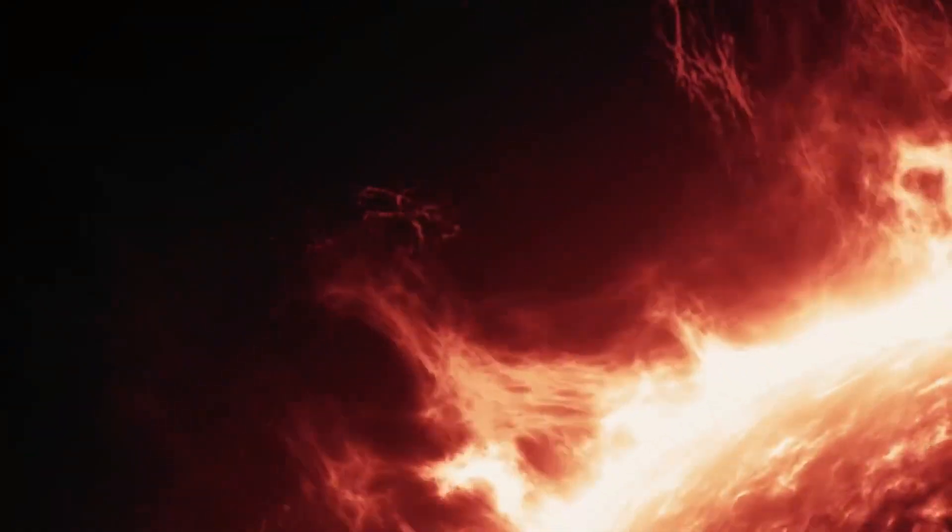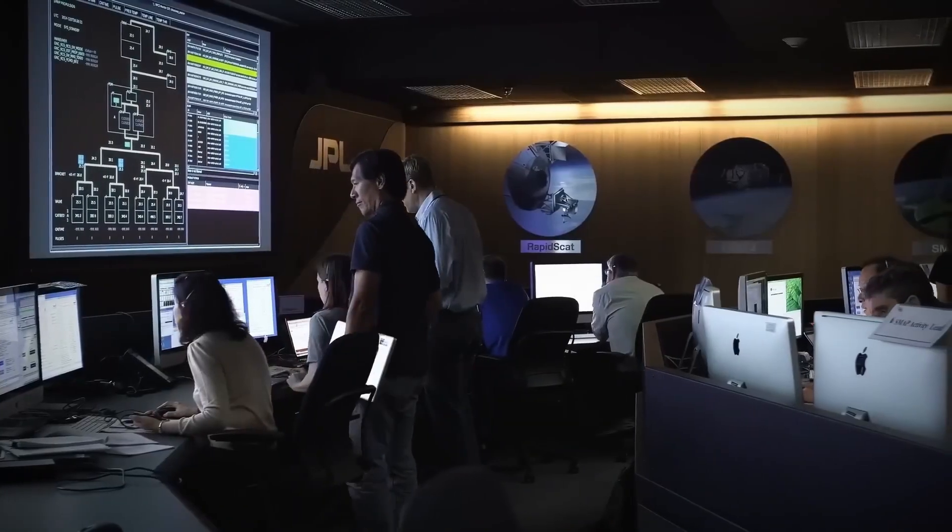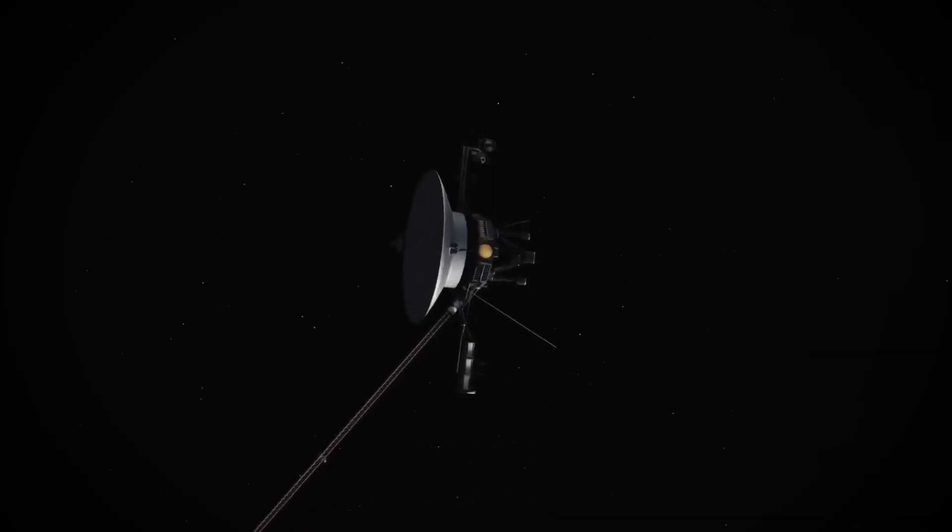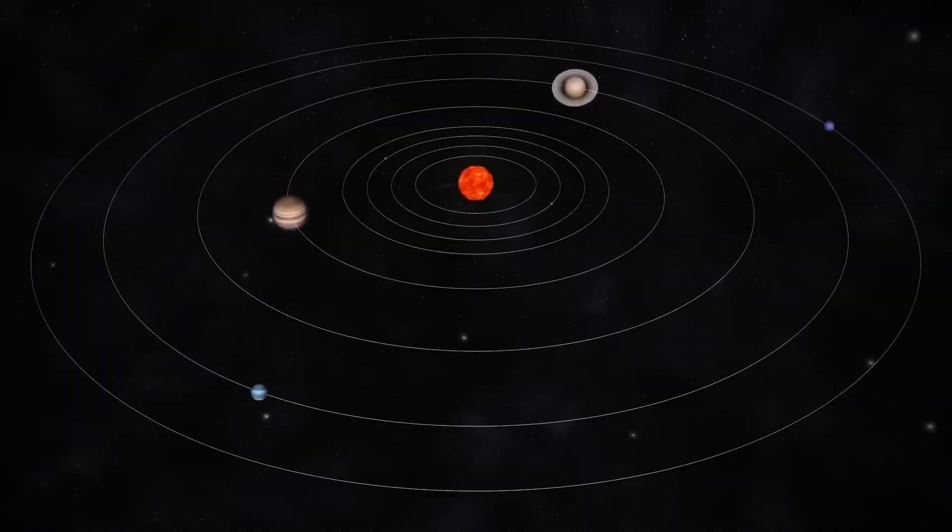In Earth's terms, this would be like discovering ocean currents in what we thought was desert. And as Voyager keeps sailing forward, it confirms that the galaxy is not a static map. It's breathing, shifting, and alive.